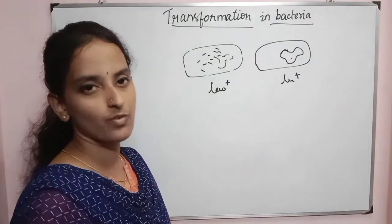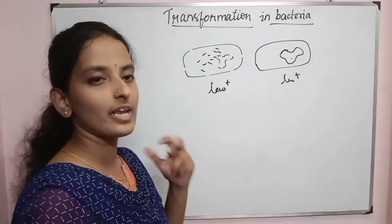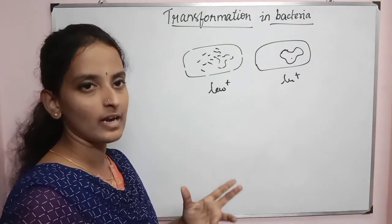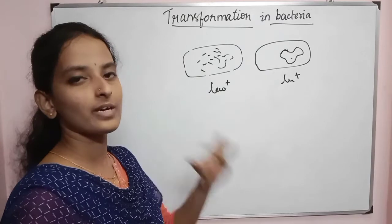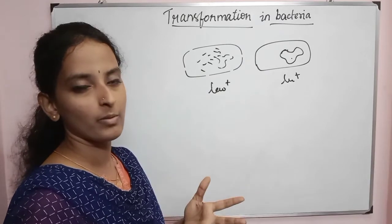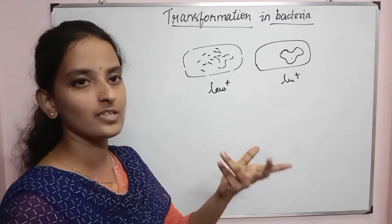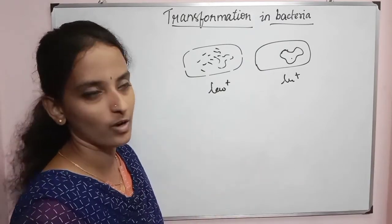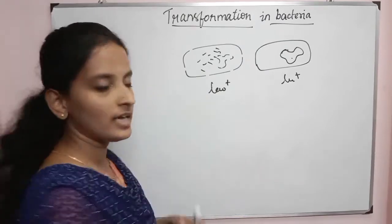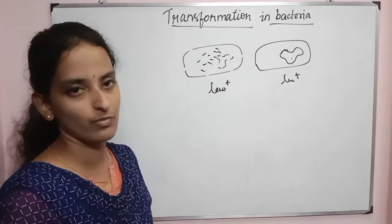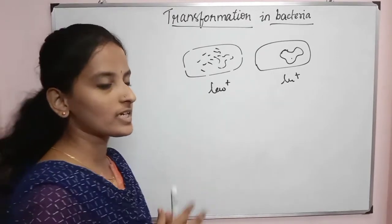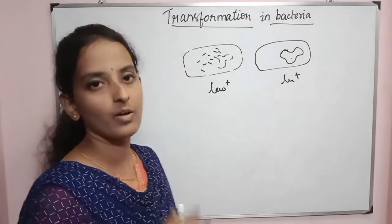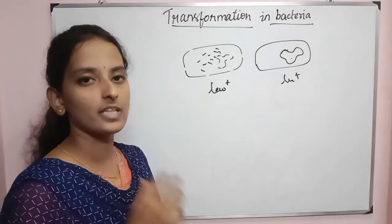This is a transformation. One inactivated form of DNA enters and activates the cell. This is the activated cell — it is activated. This is the transformation. The experimental work of Griffith covers this process.